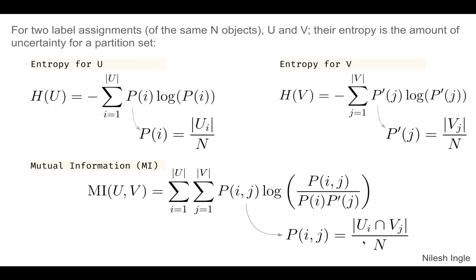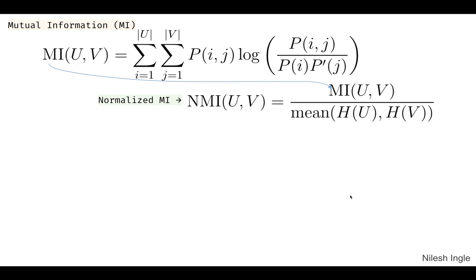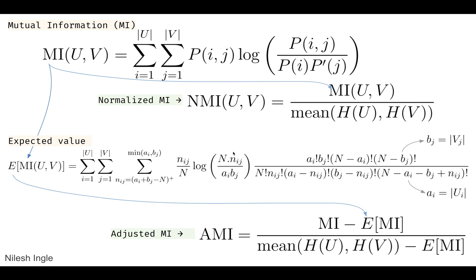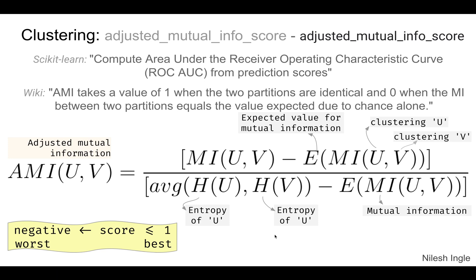We also have the term p_ij, given by a part of the equation, and then log of p_ij divided by p_i times p_j. Based on mutual information, we can also calculate normalized mutual information — that is, mutual information divided by the mean of the entropy for labels u and v. We can also compute the expected value and subtract it from the mean in the denominator to get the adjusted mutual information, which we use to quantify the quality of clustering.